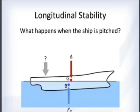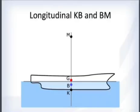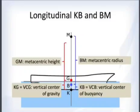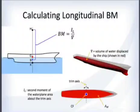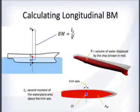Just as with transverse stability, you have a metacenter, G, B, and K defined in exactly the same way — these are just the longitudinal versions. Longitudinal BM is defined the same way except that we use the longitudinal moment of inertia of the waterplane.